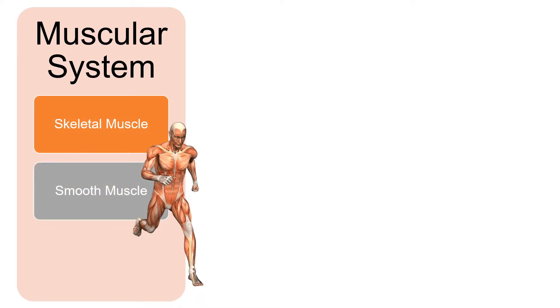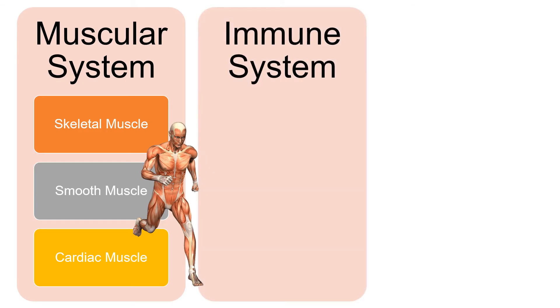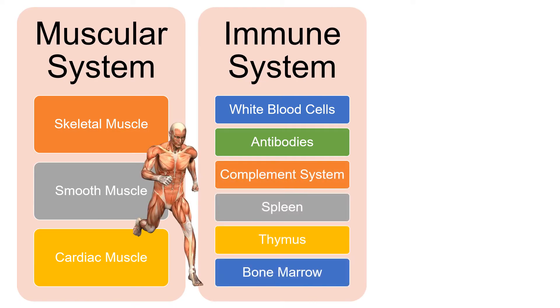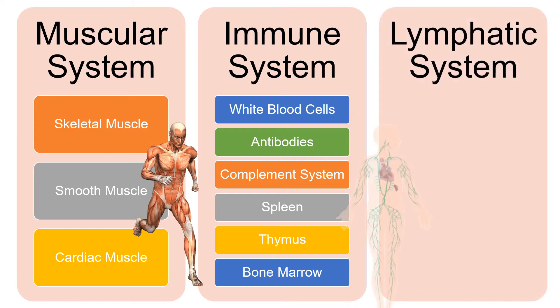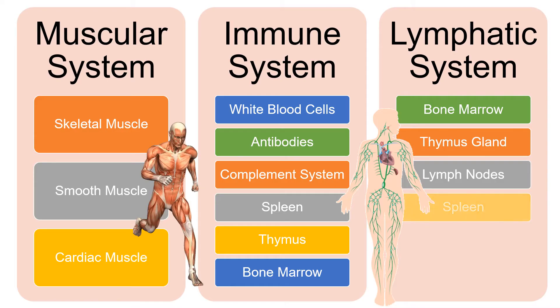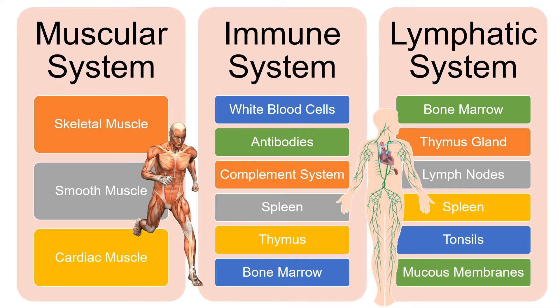The muscular system is composed of skeletal muscle, smooth muscle, and cardiac muscle. The immune system is composed of white blood cells, antibodies, complement system, spleen, thymus, and bone marrow. The lymphatic system is composed of bone marrow, thymus gland, lymph nodes, spleen, tonsils, and mucous membranes.